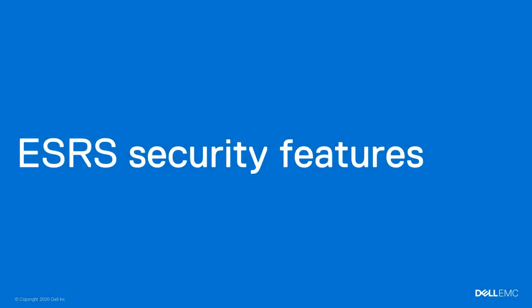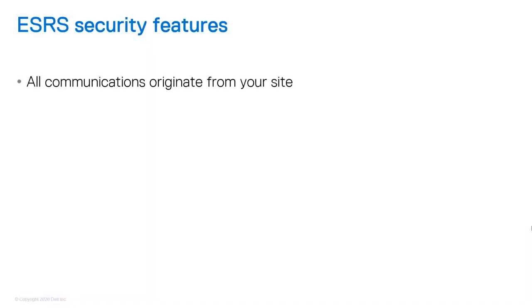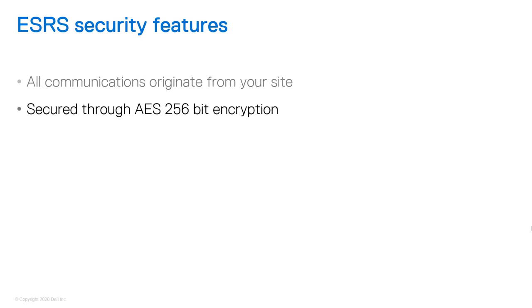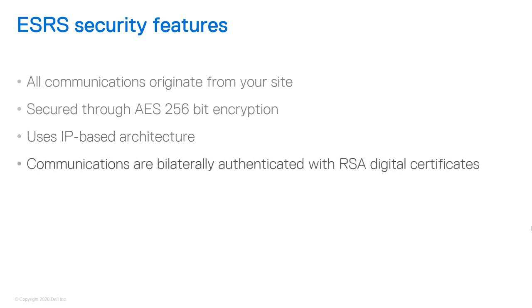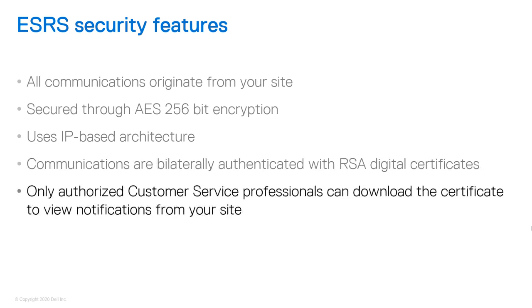Because your privacy is important to us, ESRS uses the following security features to ensure that the ESRS connection is secure. All communications originate from your site, never from an outside source, and are kept secure through the use of advanced encryption standard 256-bit encryption. ESRS also uses IP-based architecture, which integrates with your existing infrastructure and maintains the security of your environment. Communications between your site and Dell EMC support are bilaterally authenticated using RSA digital certificates. Only authorized customer service professionals, verified using two-factor authentication, can download the digital certificates needed to view a notification from your site.